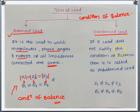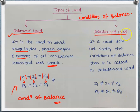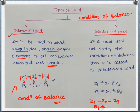If the load does not satisfy the condition of balance, it is called unbalanced load — for example, Z1 ≠ Z2 ≠ Z3 and θ1 ≠ θ2 ≠ θ3. If it is star-connected we call it unbalanced star load; if delta-connected, unbalanced delta load. Even if the first condition is satisfied but the second is not, it is still called an unbalanced load.